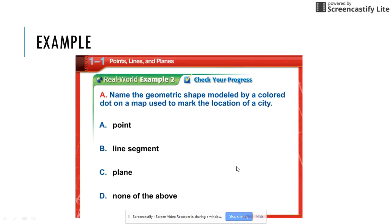Here is your first example. We talked about in the why are we learning this, a geometric shape modeled by a colored dot on a map would be considered a point. So therefore your correct answer is A.